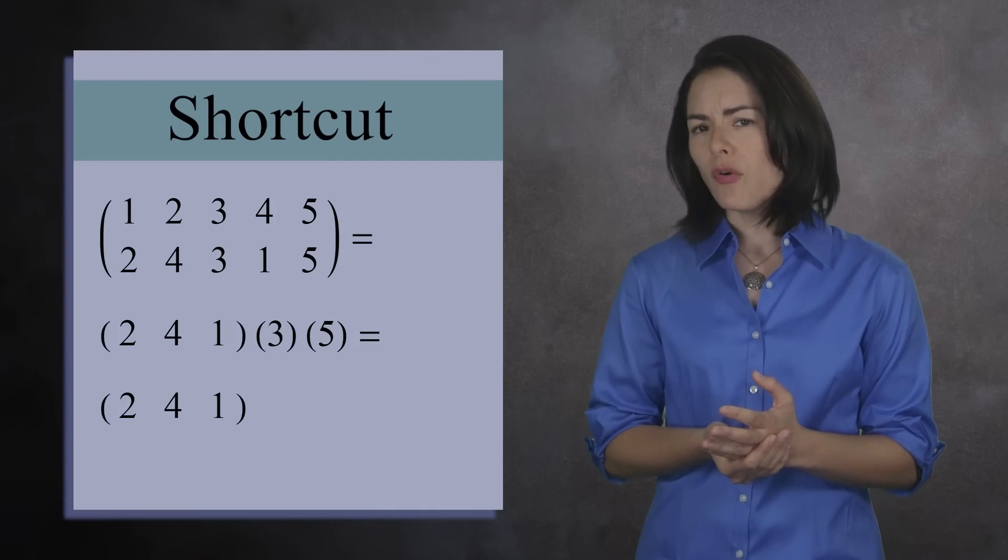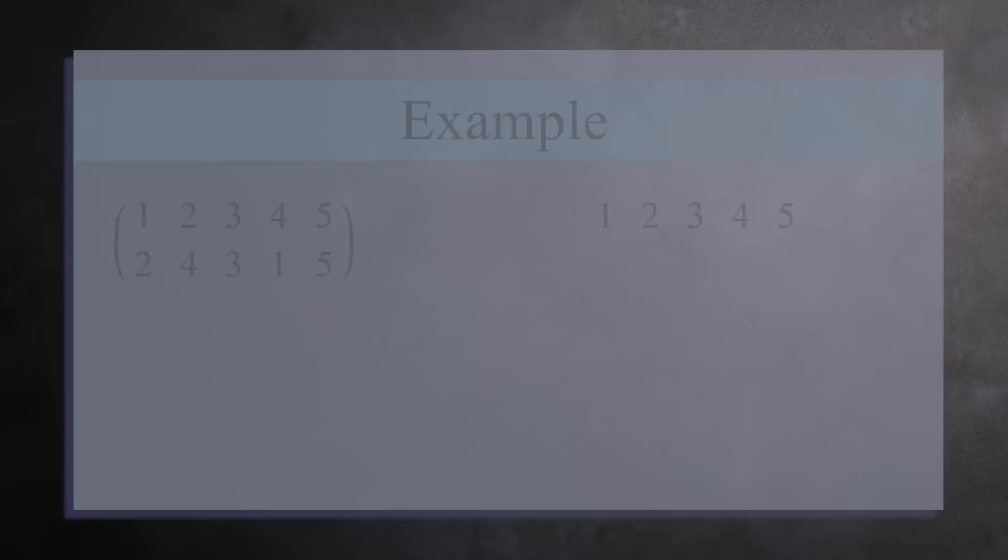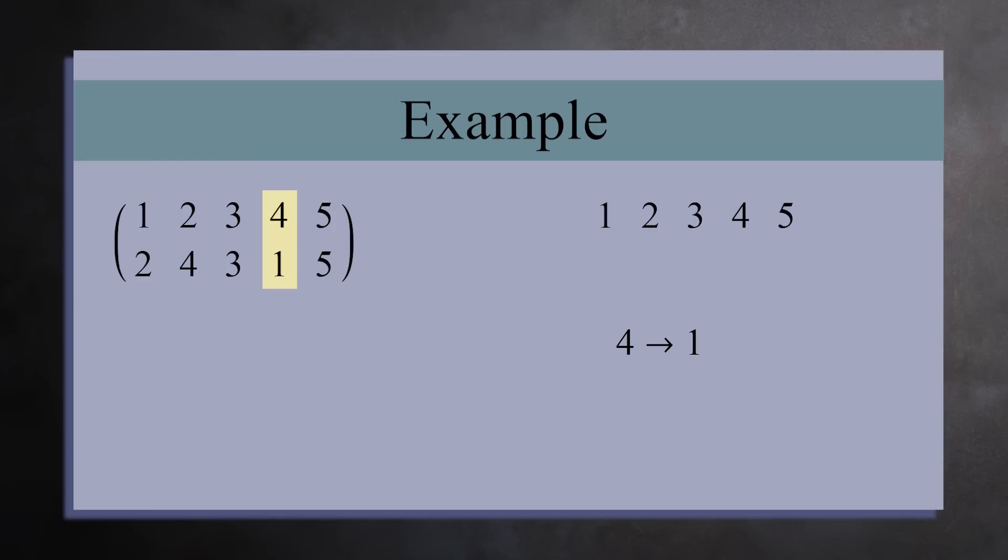But what if we had started with 4 instead of 2? 4 maps to 1. 1 maps to 2. And 2 maps back to 4. So this gives us the cycle 4, 1, 2. And as before, 3 maps to 3. And 5 maps to 5. And we leave out the 1 cycles. And for completeness, what if you had started with 1? 1 maps to 2. 2 maps to 4. And 4 maps back to 1. Giving us the cycle 1, 2, 4.